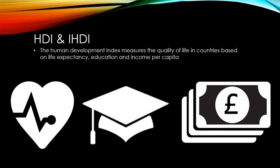The Human Development Index is a measure of the quality of life in different countries based on life expectancy, average years in education, and gross income per capita. The IHDI, or Inequality Adjusted Human Development Index, will be lower than a country's Human Development Index. For many developed countries, this will only be a couple of percentage points difference, but for less developed countries where the differences between rich and poor are stark, this can be closer to 30 or 40%.